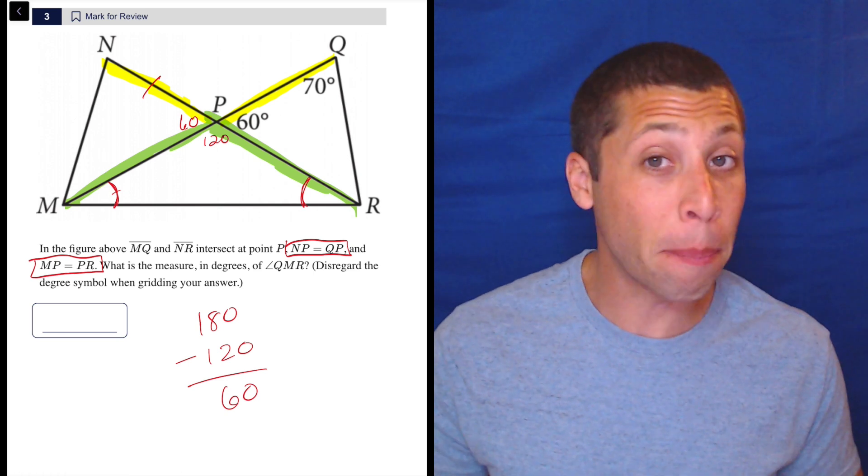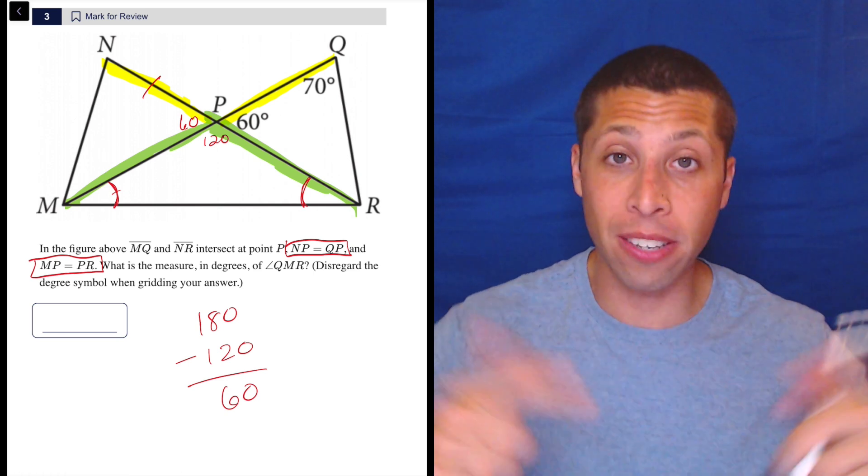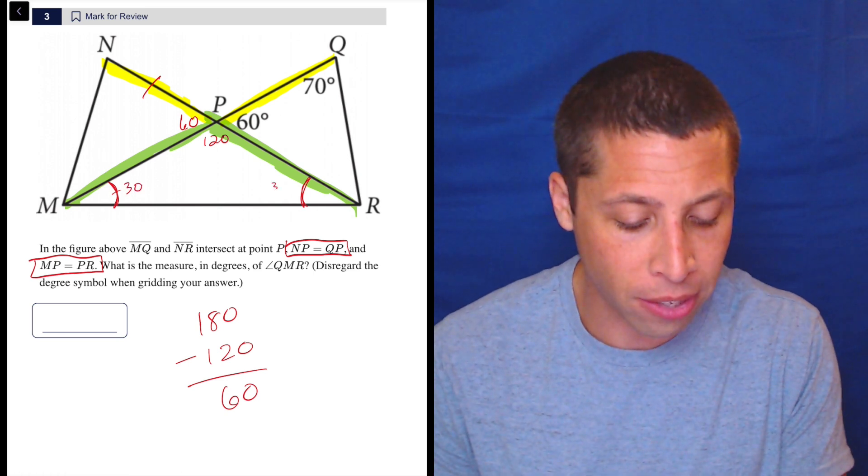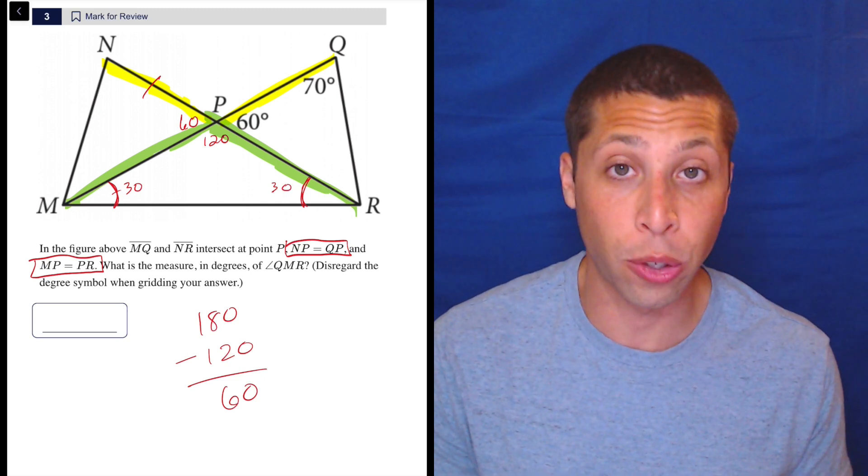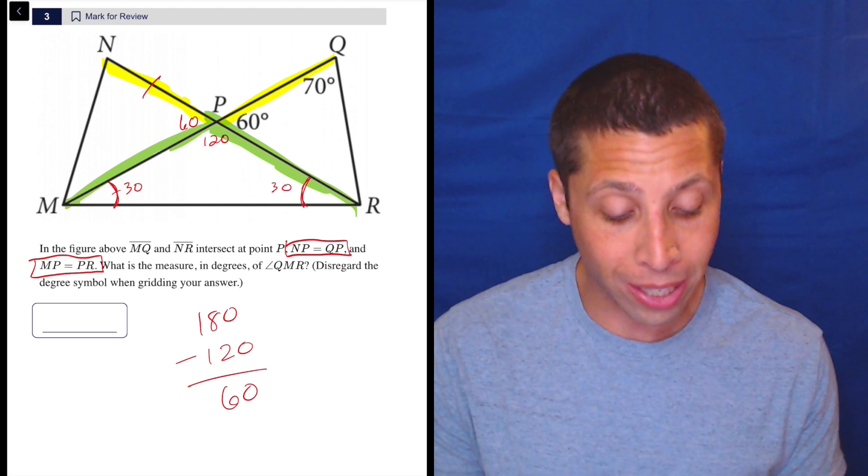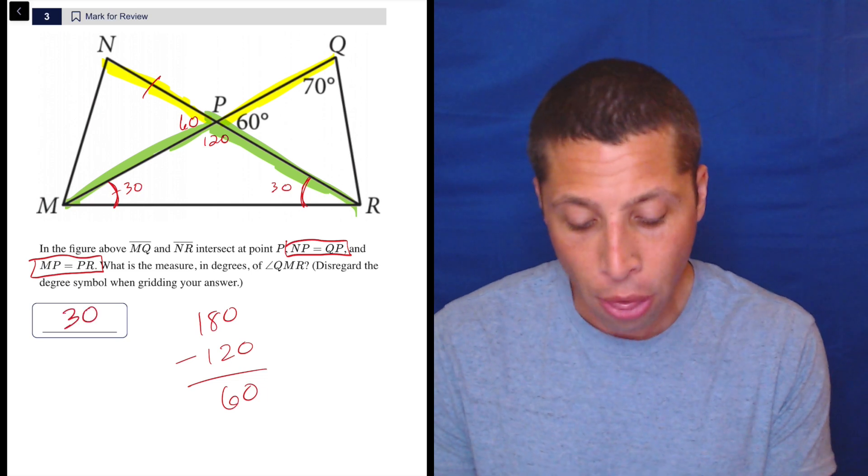That leaves us with 60. But be careful, right? That 60 is divided evenly between those two angles. So each of them is 30. We can double check. 30 plus 30 is 60. 60 plus 120 is 180. So what is the measure of that angle? It is 30.